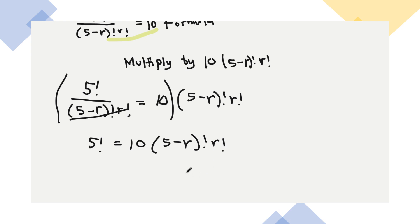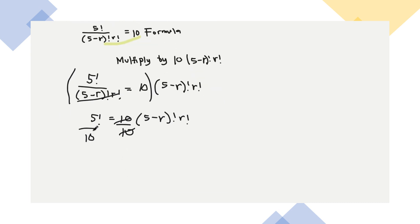Alright, next. Kasi nakuha mo na yan, ang gagawin mo naman, itong 10, ilipat mo dito sa kabila. Yung variable na 10, i-divide mo naman to both sides by 10. Yan, para makuha mo yung R, kasi R yung hinahanap natin. Maiiwan yung variable. So i-divide mo by 10 para matransfer na yan siya. So ganyan na yung mangyayari. So magiging 5 factorial over 10, is equals to (5-R) factorial R factorial. Yan, naintindihan?